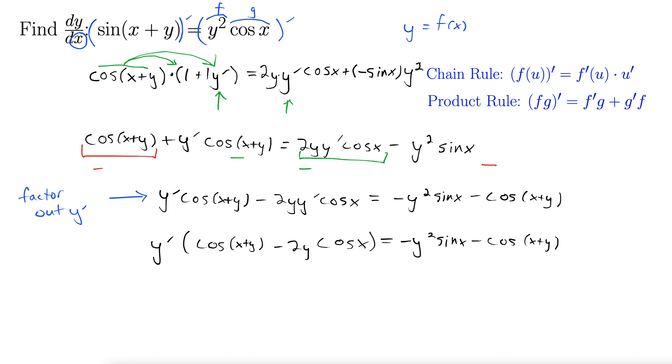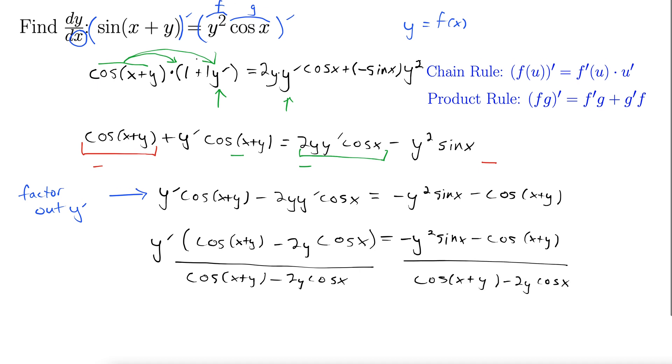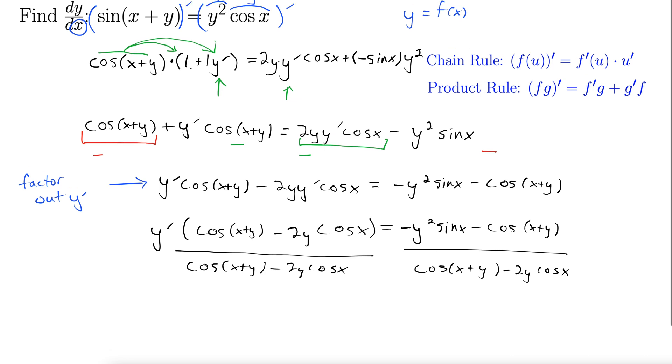Now to get y prime by itself we divide both sides by all this stuff currently multiplying the y prime. So we'll divide by cos x plus y minus 2y cos x and we do that to both sides. And there you have it. That's your y prime. I'm going to rewrite this just a little bit to make it look nicer.